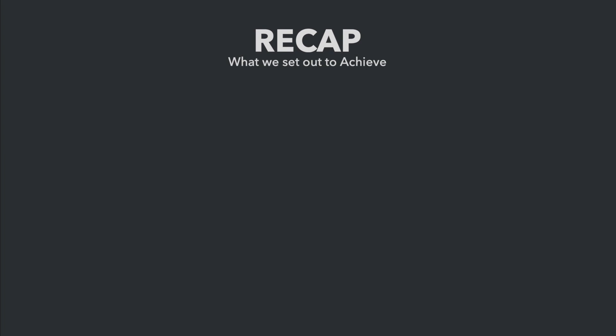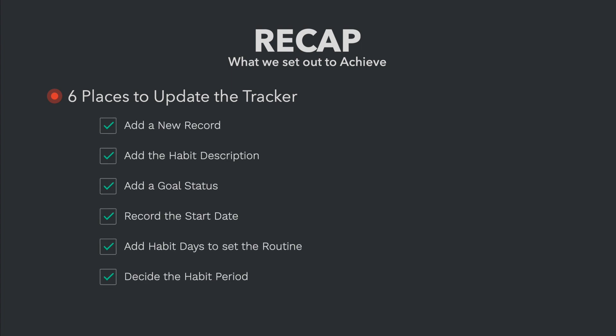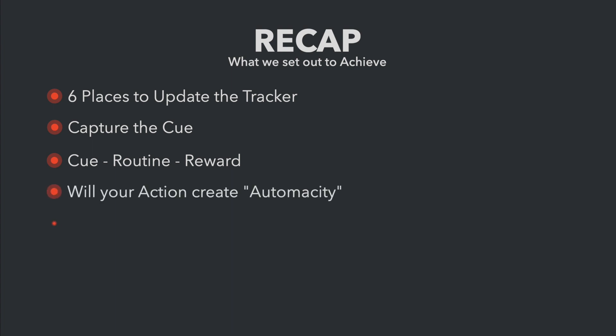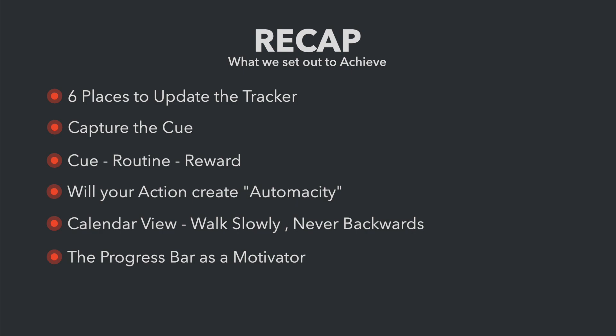Just to recap — this is what we set out to achieve. The tracker has six places to touch for a habit: add a new record, add the habit description, add a goal status, record the start date, add the number of habit days to set the routine, and decide on the habit period. To maintain it every day, you just need to drag the habit progress in the calendar view by a day until it's completed. The information on the cues inside the template helps you capture cues very well. We captured cues, routines, and rewards. We highlighted whether the habit will get automated or not. The calendar view will help you walk slowly and never backwards, and the progress bar will motivate you to defend the effort you have already put in.